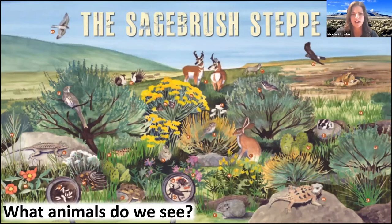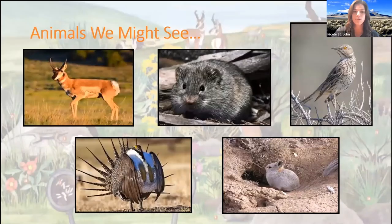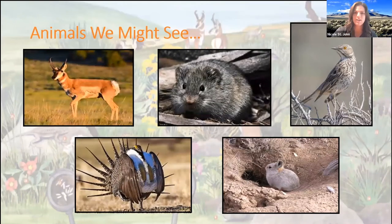We've got quite an array of wildlife species there. Some of the ones we're going to focus in on today include these five: the pronghorn antelope, the sagebrush vole — he was hiding down there in the grass — the sage thrasher, the greater sage grouse, and the pygmy rabbit.